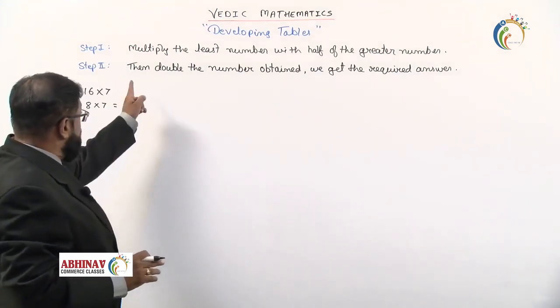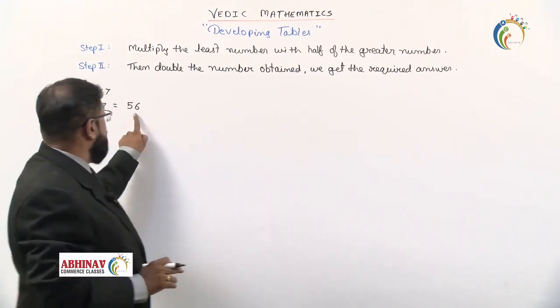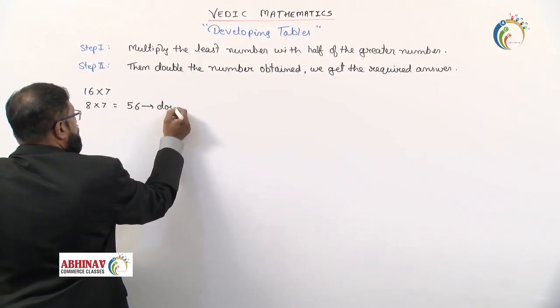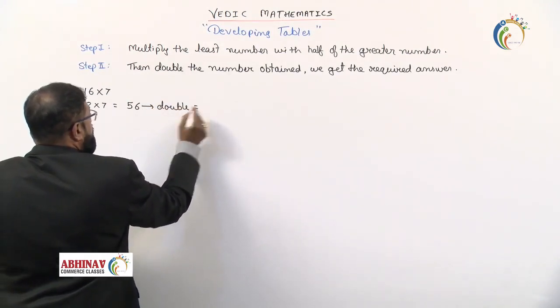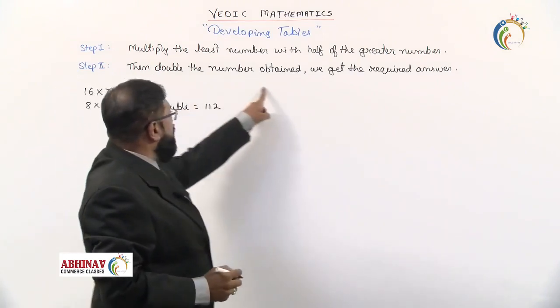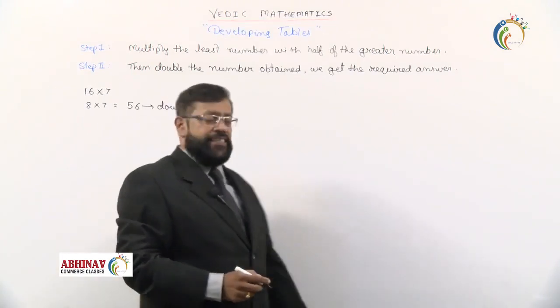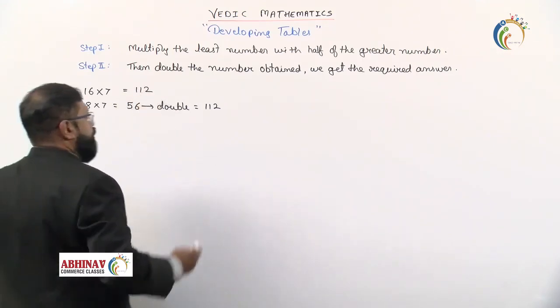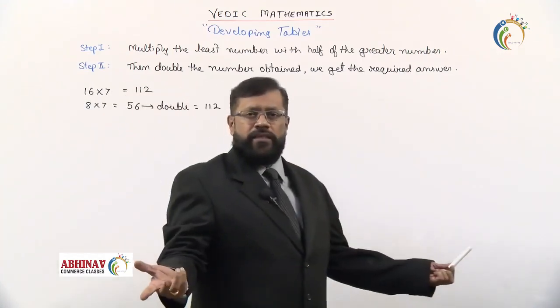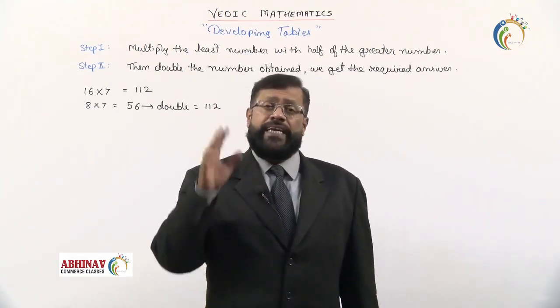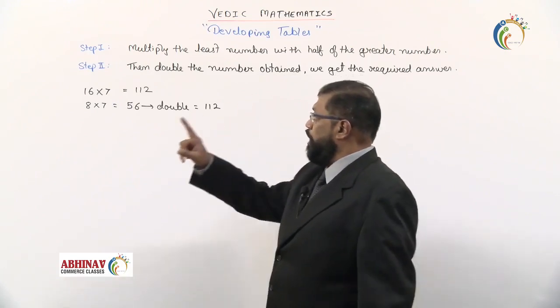Then step 2, double the number obtained. So 56 we got, we are going to double this. 56 double is 112. Double the number obtained, we get the required answer. So 16 sevens is 112. That's all. This is the trick. Even if you don't remember the tables, this is how we can develop the tables.